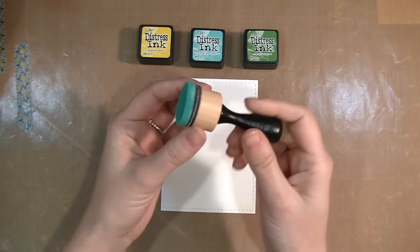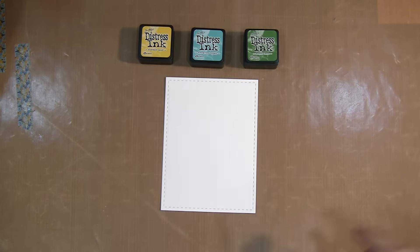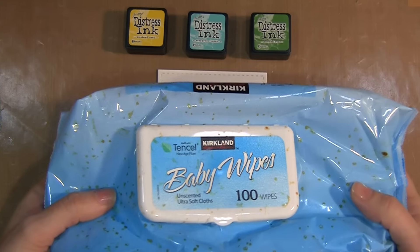Normally for my backgrounds and distressed things, I'll use a blending tool. But if you don't have a blending tool, you have other options. Just use a regular baby wipe.